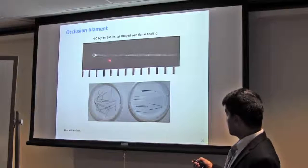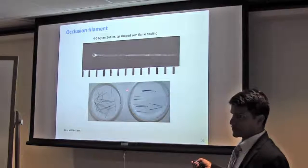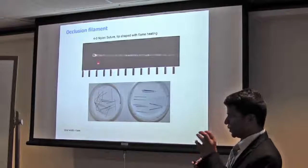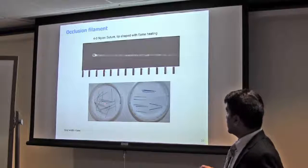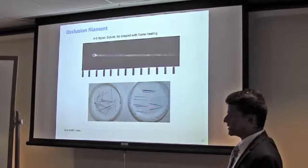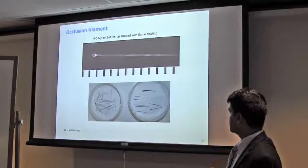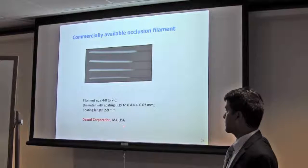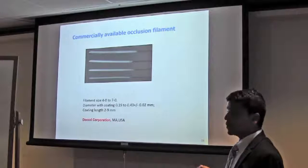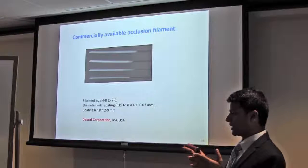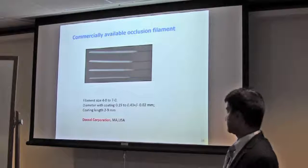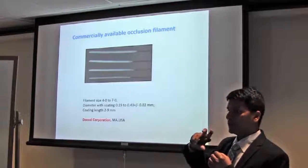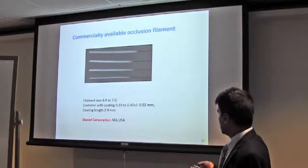Previously, people used the filament custom-made in the laboratory, just heating the filament to make some round shape, so it blocks the blood. Some people used hardening materials, coating the filament, so you can have more diameter. But nowadays, this filament is commercially available by Doccol Corporation. These are homogenous. The diameter is good, and whatever diameter you want, they will make for you. Because it depends on the animal size, animal age, so the artery diameter varies. So you can use this one.